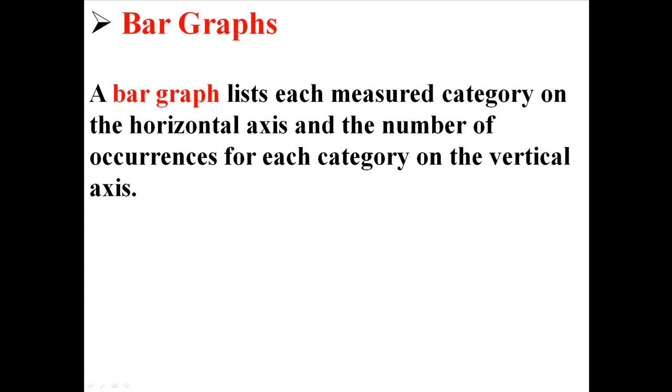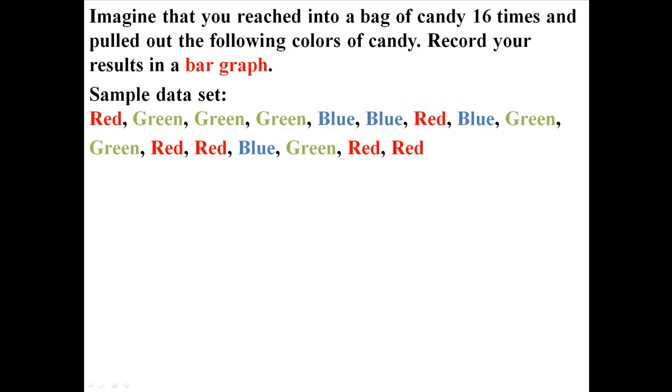Now a bar graph lists each measured category on the horizontal axis and the number of occurrences for each category on the vertical axis. So let me show you what that looks like.